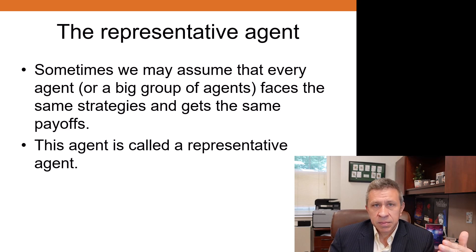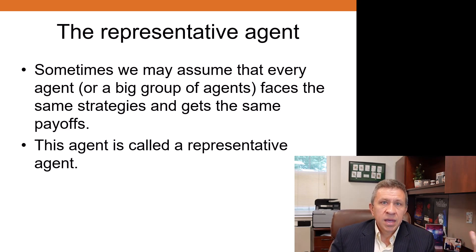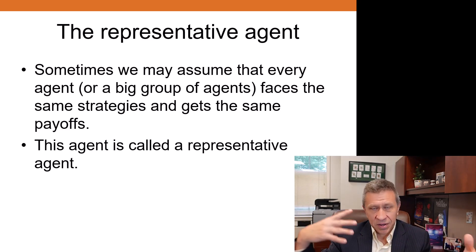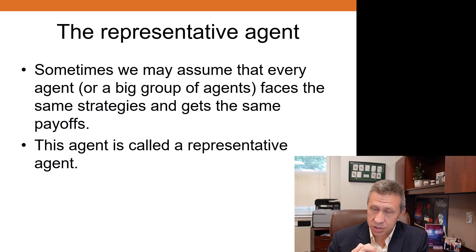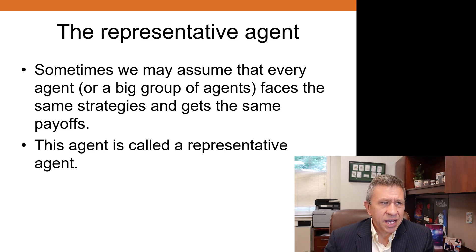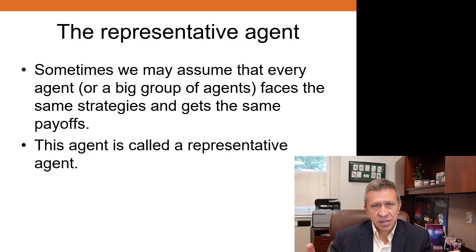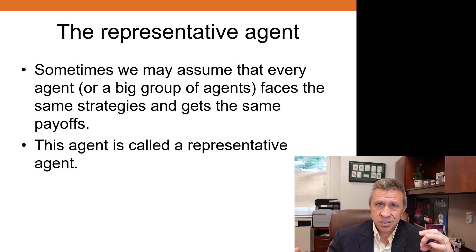So if you're dealing with a million people, all million people have the same distaste for waiting in line, for example — the same utility function, same payoff structure, all of that. Is this entirely accurate? No, this is an assumption we have to make, but as you'll see, by making this assumption we end up getting some pretty good insights and realistic results as we start to go through some example games.